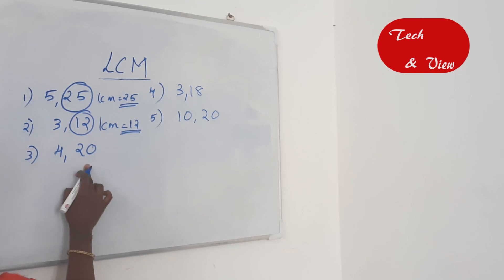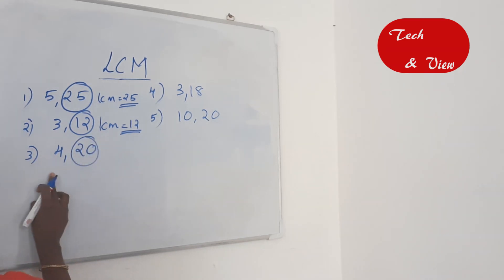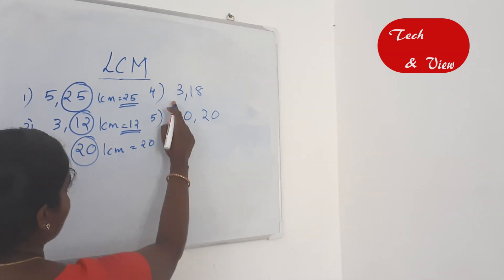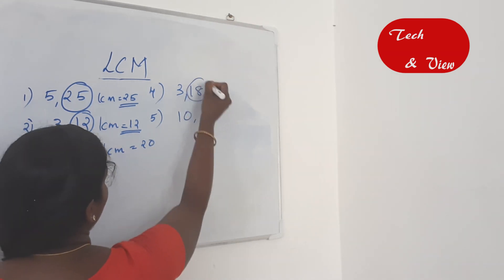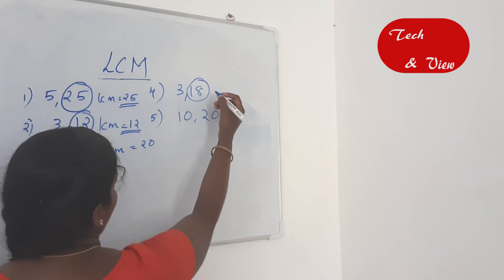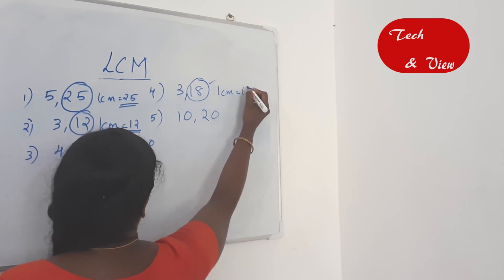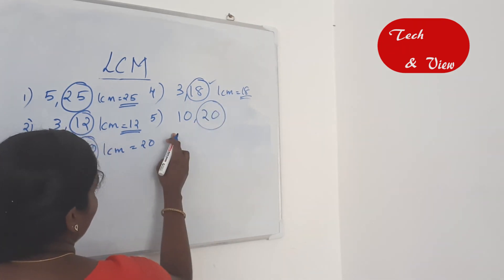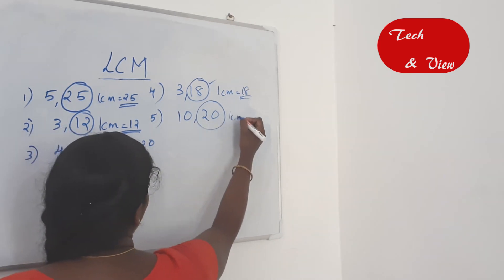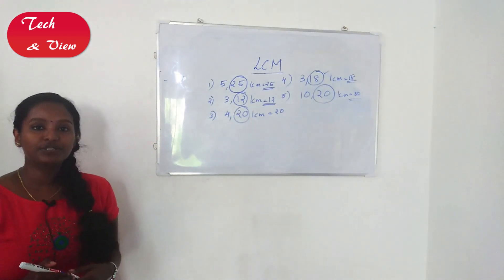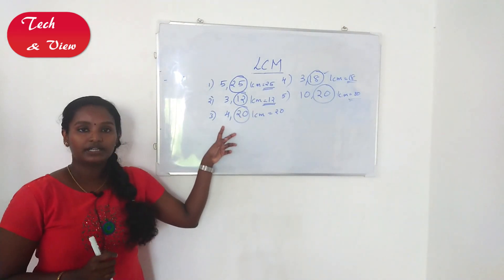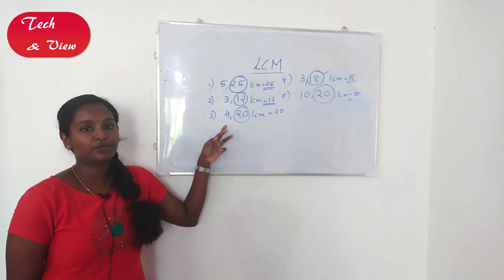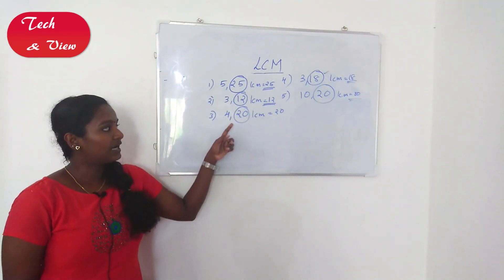Third example: 4 and 20. The greatest number is 20. 20 divided by 4 is 5 — fully divisible. So LCM is 20. Fourth example: 3 and 18. The largest number is 18. 18 divided by 3 is 6 — fully divisible. So LCM is 18. Fifth example: 10 and 20. The largest number is 20. 20 divided by 10 is 2 — fully divisible. So LCM is 20.